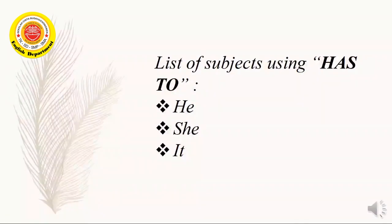Next, list of subjects using has to. Selanjutnya adalah subjek-subjek yang menggunakan has to. Untuk subjek yang menggunakan has to, it is only three. Hanya ada tiga, yaitu he untuk dia laki-laki, she dia perempuan, it dia untuk hewan atau benda.